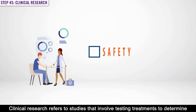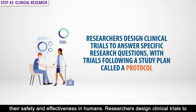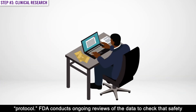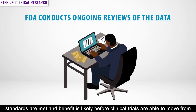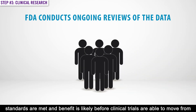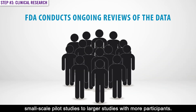Step number three: Clinical Research. Clinical research refers to studies that involve testing treatments to determine their safety and effectiveness in humans. Researchers design clinical trials to answer specific research questions, with trials following a study plan called the protocol. The FDA conducts ongoing reviews of the data to check that safety standards are met and benefit is likely, before clinical trials are able to move from small-scale pilot studies to larger studies with more participants.